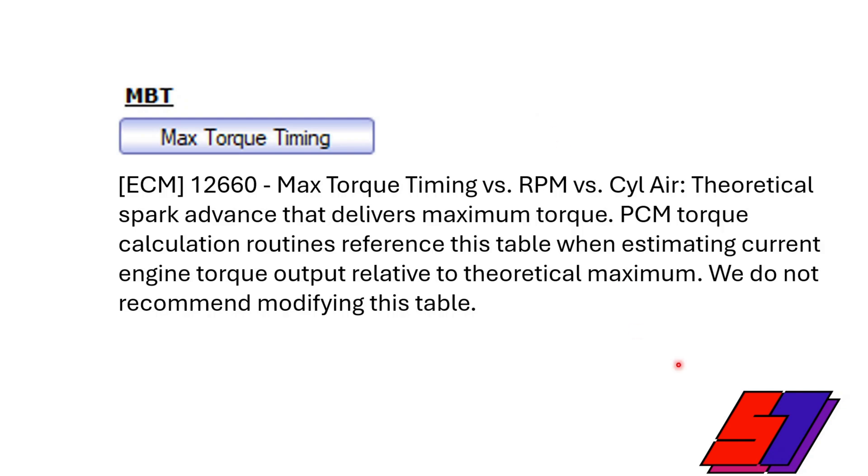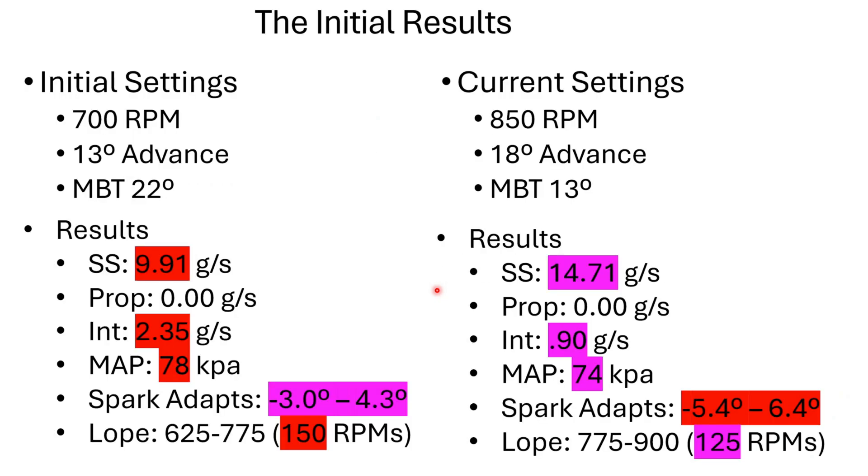MBT baby - max torque timing. This is what I found. I will call your attention: HP Tuner says 'we do not recommend modifying this table.' So, and it's funny - timing, no pun intended - but I just did that video on ignition timing, RPM, and burn speed all really talking about maximum base torque timing. So this is the theoretical spark advance that delivers maximum torque. The ECM torque calculation routines reference this table when estimating current engine torque output relative to the theoretical maximum. So whatever, I'm gonna send it, right? Because in my opinion this is probably fine for a stock or near stock engine, but I don't have a stock cam. I have more compression and I have different heads, aftermarket heads on this thing, and obviously different exhaust too. So this max torque timing table is out the window, right?